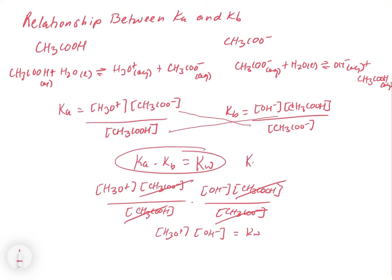And if you remember, Kw is the autoionization constant, which is 1.0 times 10 to the minus 14th at 25 degrees Celsius.